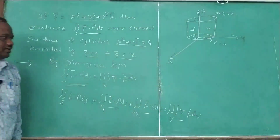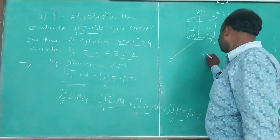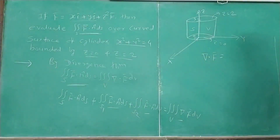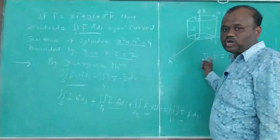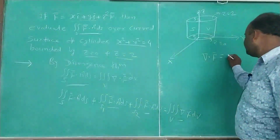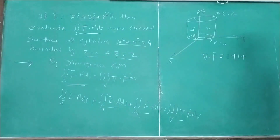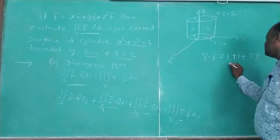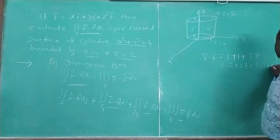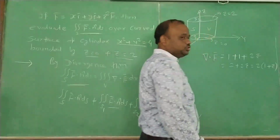For the triple integration, first we find ∇·f̄. Given f̄ = xī + yj̄ + z²k̄, we compute ∇·f̄ as the derivative of x with respect to x, which is 1, plus derivative of y with respect to y, which is 1, plus derivative of z² with respect to z, which is 2z. So ∇·f̄ = 2 + 2z = 2(1 + z).